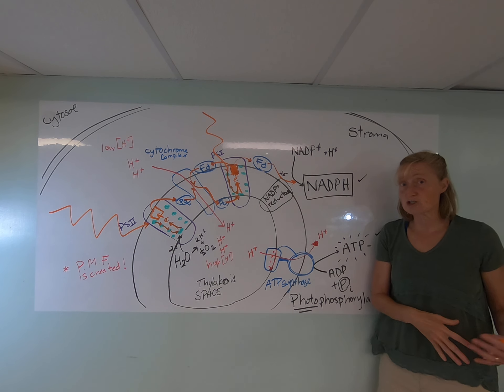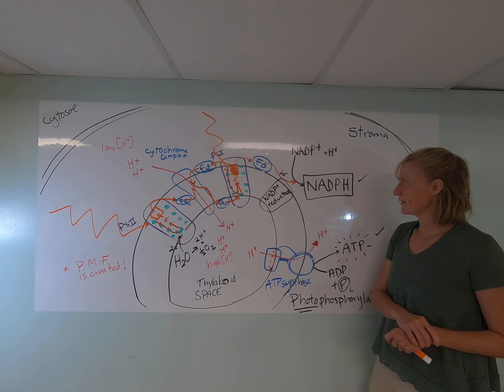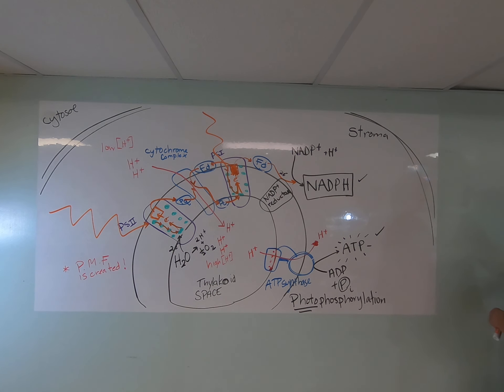So they need to do something with this ATP. They need to use it to make some sugars that they can save up for later and later use those sugars to drive the synthesis of ATP by cellular respiration.